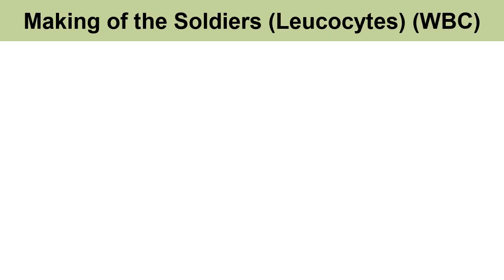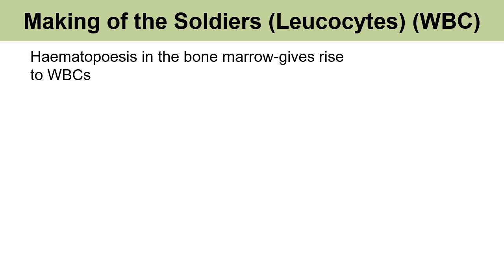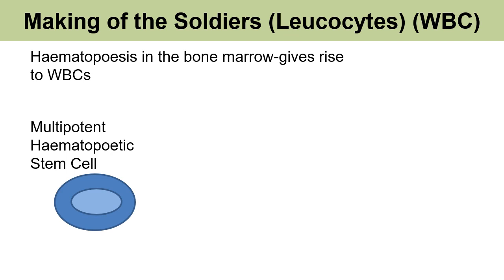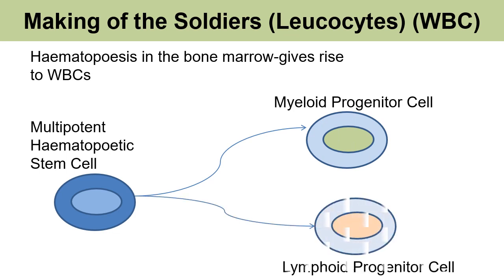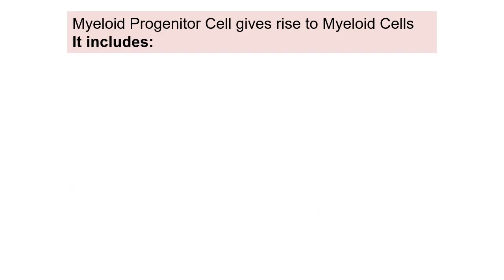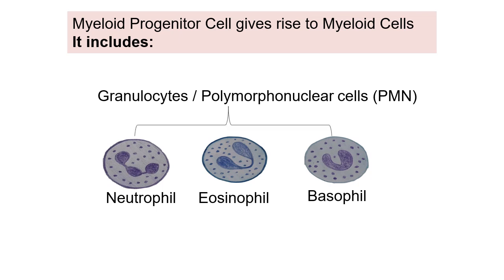Let us see how different cells of the immune system originate. There is a process called hematopoiesis that takes place in the bone marrow, which gives rise to different cells of the WBC. It all begins with a multipotent hematopoietic stem cell, which gives rise to the myeloid progenitor cell and the lymphoid progenitor cell. The myeloid progenitor cell gives rise to myeloid cells, including the granulocytes such as neutrophil, eosinophil, and basophil, also known as polymorphonuclear cells because their nuclei have multiple lobes.